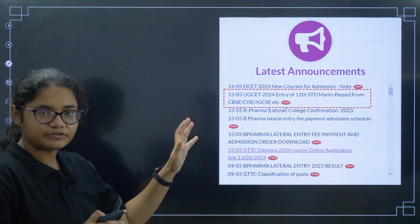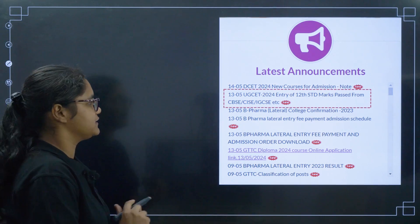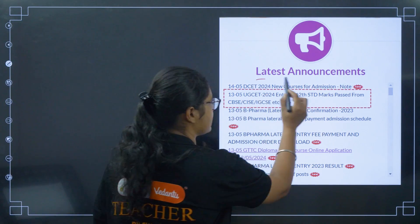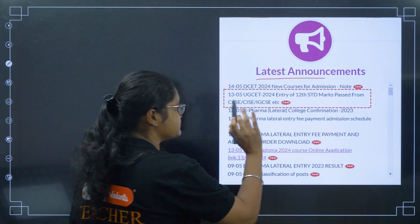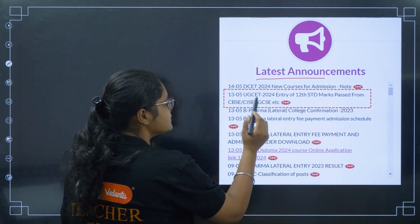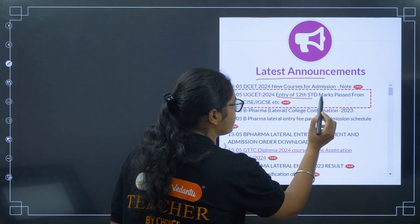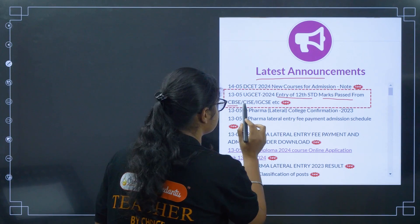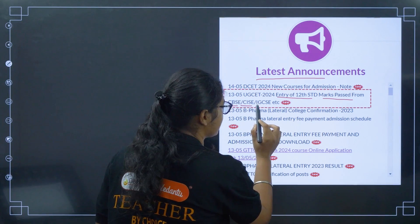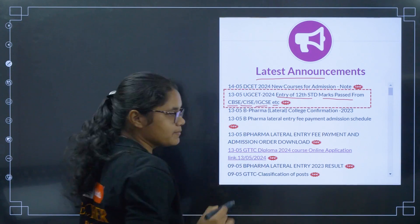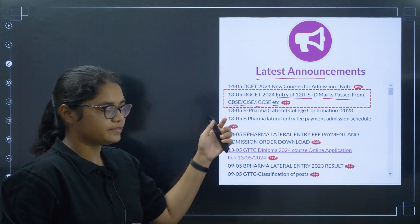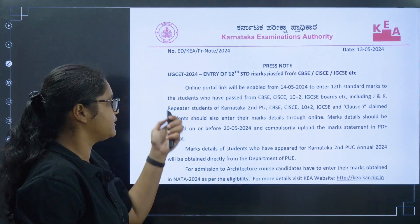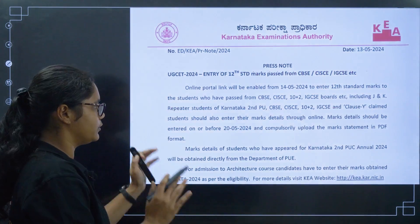You can check the official website of KSET in the latest announcements section. There you will find a notice regarding entry of 12th standard marks for students who passed from CBSE, CISCE, IGCSE, etc. Once you click on that link you can get the detailed notice.